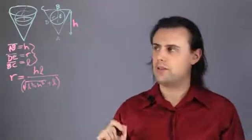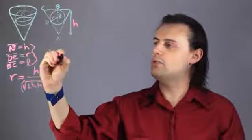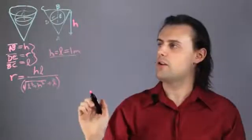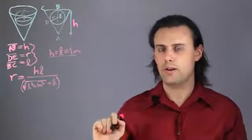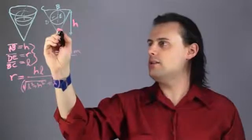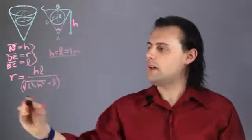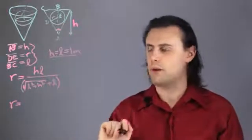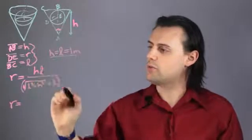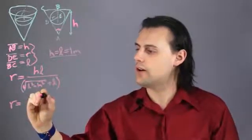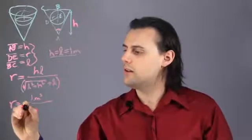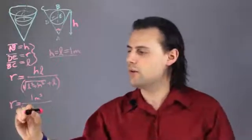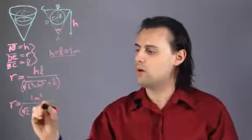So if I consider a length H equal to L equal to 1 meter, so in this scenario I'm dealing with a right cone, meaning that this angle is 90 degrees, then I find that the radius of my maximum sphere inside of my right cone is going to be equal to 1 meter times 1 meter, it's just 1 meter squared at the top, divided by the square root of 1 squared plus 1 squared, which is the square root of 2, plus 1 meter.